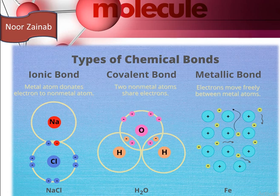In metallic bonding, positively charged metal atoms are present and electrons move freely like a sea of electrons. For example, covalent bonding is formed between water molecules, and ionic bonding is formed in NaCl and sodium fluoride.